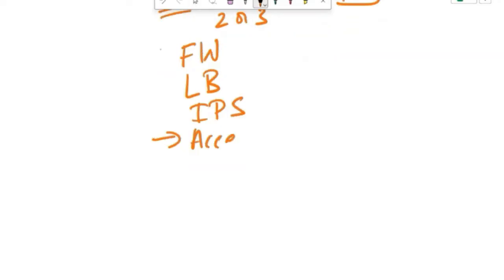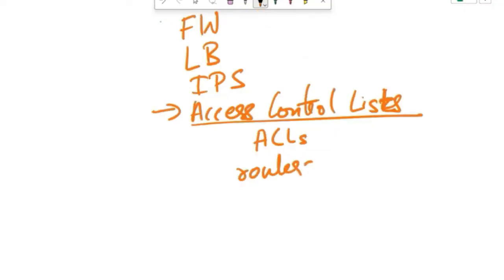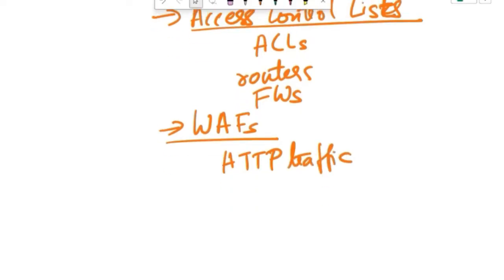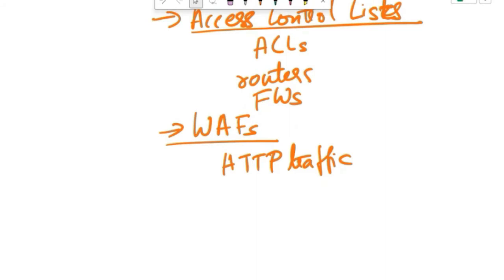Next is configuring Access Control Lists, that is ACLs, on routers and firewalls to filter incoming traffic based on source IP addresses, protocols or ports. Next one is Web Application Firewalls, WAFs. These can inspect and filter HTTP traffic to web applications, blocking malicious requests and known attack patterns. Some commercial WAF solutions include ModSecurity, Cloudflare WAF and Imperva WAF. They protect against HTTP-based attacks.